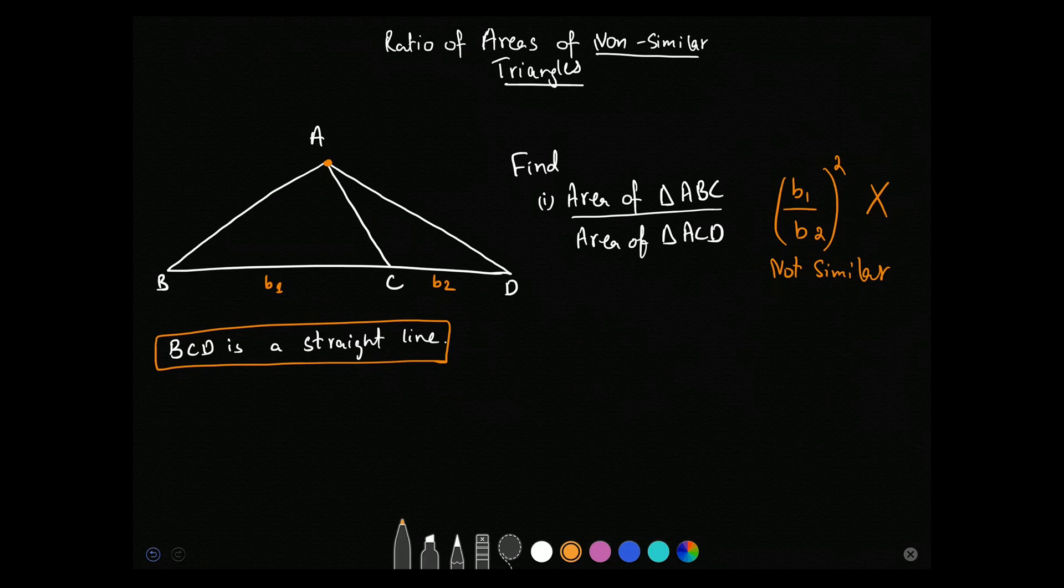So suppose I want to find the area of triangle ABC. It will be 1 upon 2 into B1 into height. Now height, please note, is always perpendicular to your base. The triangle tip's perpendicular distance is the height. So I will draw the height from A perpendicular to BC. This is our height. So half into B1 into h.